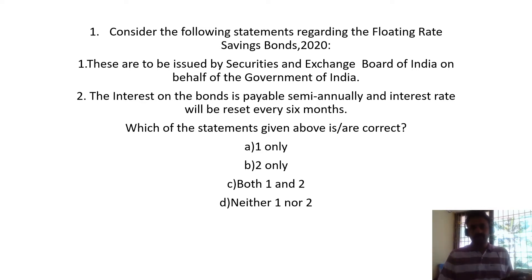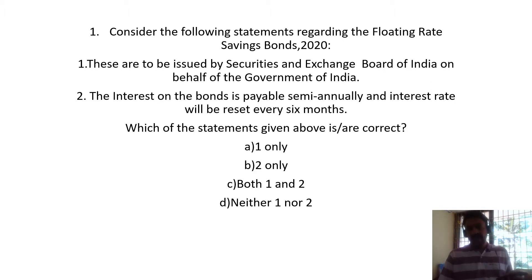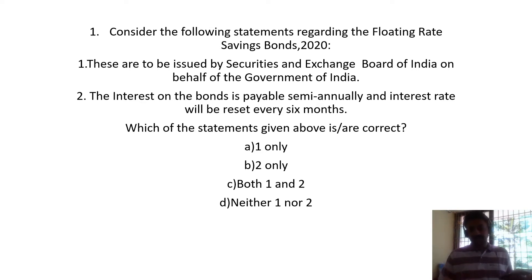The statements are: Statement 1 - these are to be issued by Securities and Exchange Board of India on behalf of the Government of India. Statement 2 - the interest on the bonds is payable semi-annually and the interest rate will be reset every six months. You have to tell which of the statements above are correct.